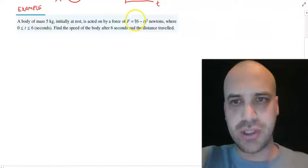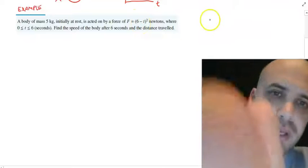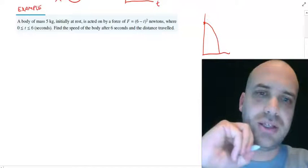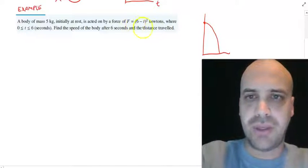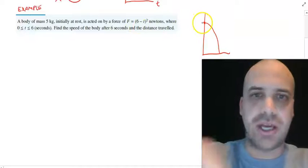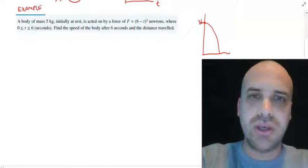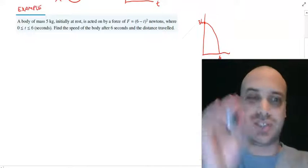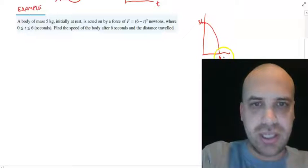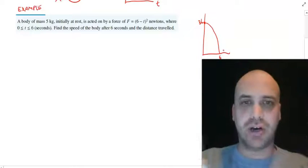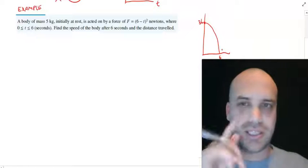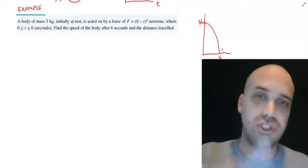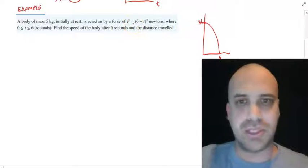Now, this force, just so we can think about it a little bit, it looks like it's a quadratic there. So, it starts with a force of, at time 0, it's going to have 36 newtons of force. But at time 6, we're going to be applying 0 newtons of force. So, you can see for those 6 seconds, the force starts really high and then it eventually comes down to 0 by the end of the 6 seconds. You don't have to draw this picture, of course, I'm just showing you that the force is changing and it's good to think about that when you're doing these questions.